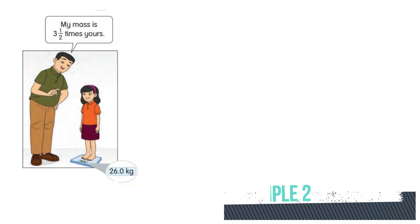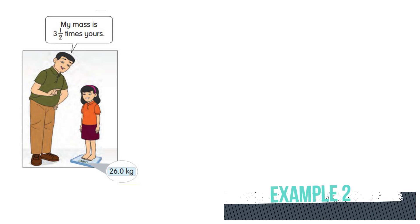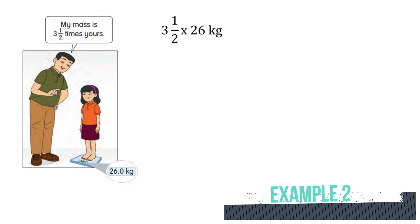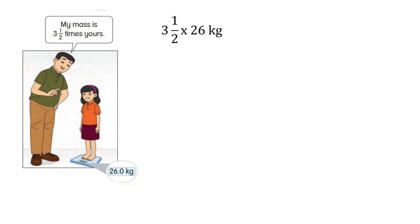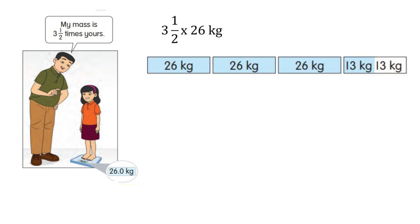Now look at example two. In this dialogue: my mass is three and one over two times yours. That means the mass is three and one over two multiplied by 26 kilograms. Represent the 26 kilograms in a diagram — we'll have three lots of 26 kilograms.